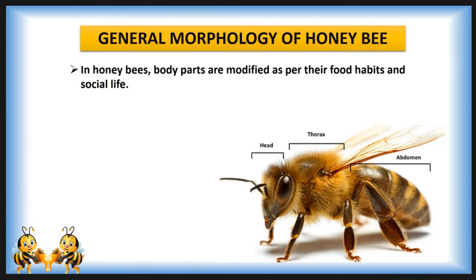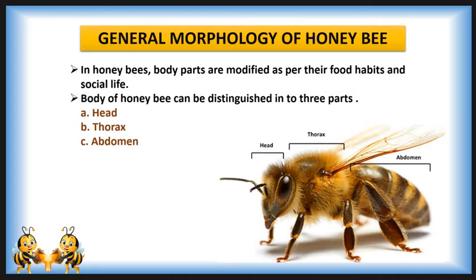In honeybee, body parts are modified as per their food habit and social life. Like an insect, the body of honeybee can be distinguished into three parts: head, thorax, and abdomen. In this lecture we are going to discuss the detailed morphology of honeybee.